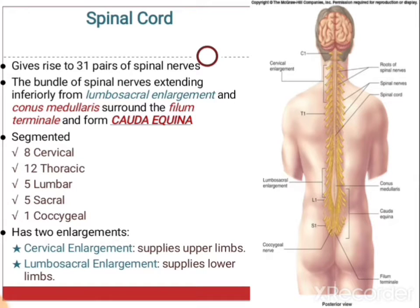The spinal cord is segmented, containing cervical, thoracic, lumbar, sacral and coccygeal segments. There are 8 cervical segments, 12 thoracic, 5 lumbar, 5 sacral and 1 coccygeal segment.